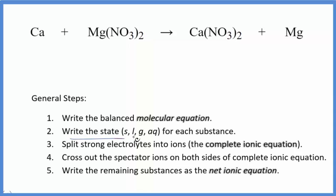Next, we need to write the states for each substance. Calcium, that's just a metal all by itself, so it's going to be a solid. Nitrates, if you know your solubility rules, very soluble, AQ for aqueous. This is going to dissolve and dissociate into its ions.